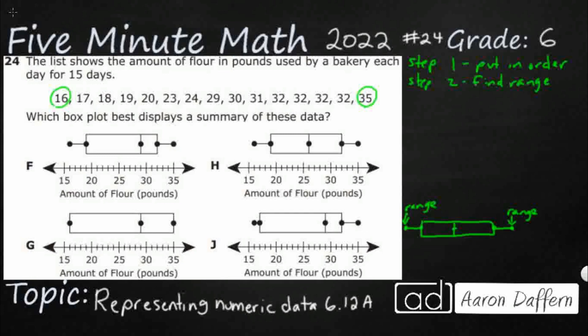So we need to find some charts here, some box plots that go from 16 to 35. So F is looking good. And G, I'm already going to go ahead and get rid of, because it goes to 16 to 35. So that's not going to work. H is fine with 16 to 35. J is fine with 16 to 35. All right, so we got rid of 1.